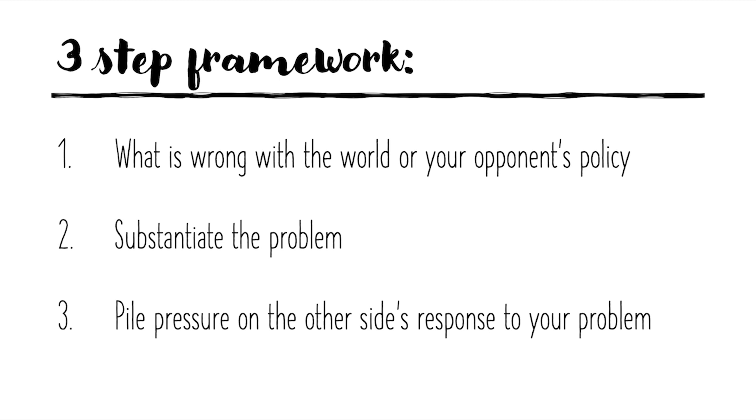Step three: you now need to pile pressure on the other side to respond to your problem. This is something that should be part of framing the problem, but it's often rarely emphasised, which is to engage the other side even if you're Prop 1, by casting doubt on the potential solutions you have. So, opposition in the above debate might choose to go for something like organic change, by saying the film industry is already liberalising, and therefore there is no need for separate gender categories by proposition.